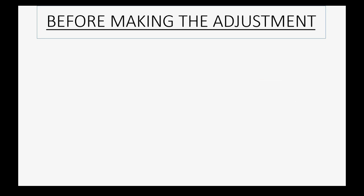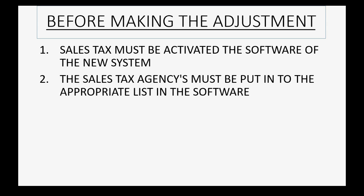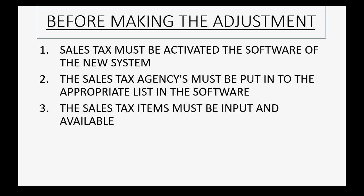Before making the adjustment for sales tax, it is assumed that sales tax is activated in the software in the new system. It's also assumed that the sales tax agencies are put on the appropriate list so that we can choose them as we make our adjustment. You have to have the sales tax items entered and available for use before you can set up the correct money amounts for each agency and the money amounts in the T-account for sales tax payable.